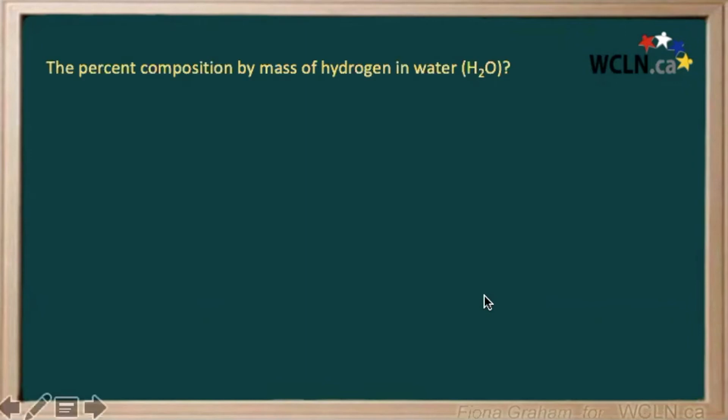The question asks, what is the percent composition by mass of hydrogen in water? To answer this, we must first calculate the mass of our hydrogen in the water, and then find the ratio of that mass to the mass of the whole water compound.